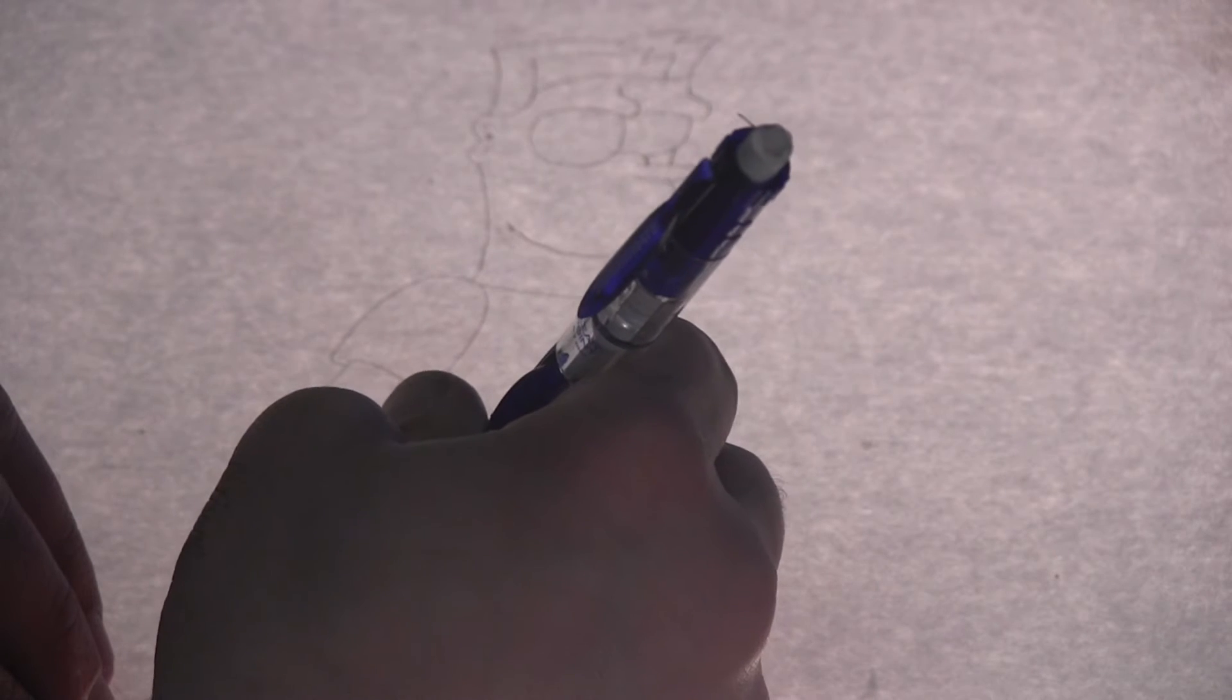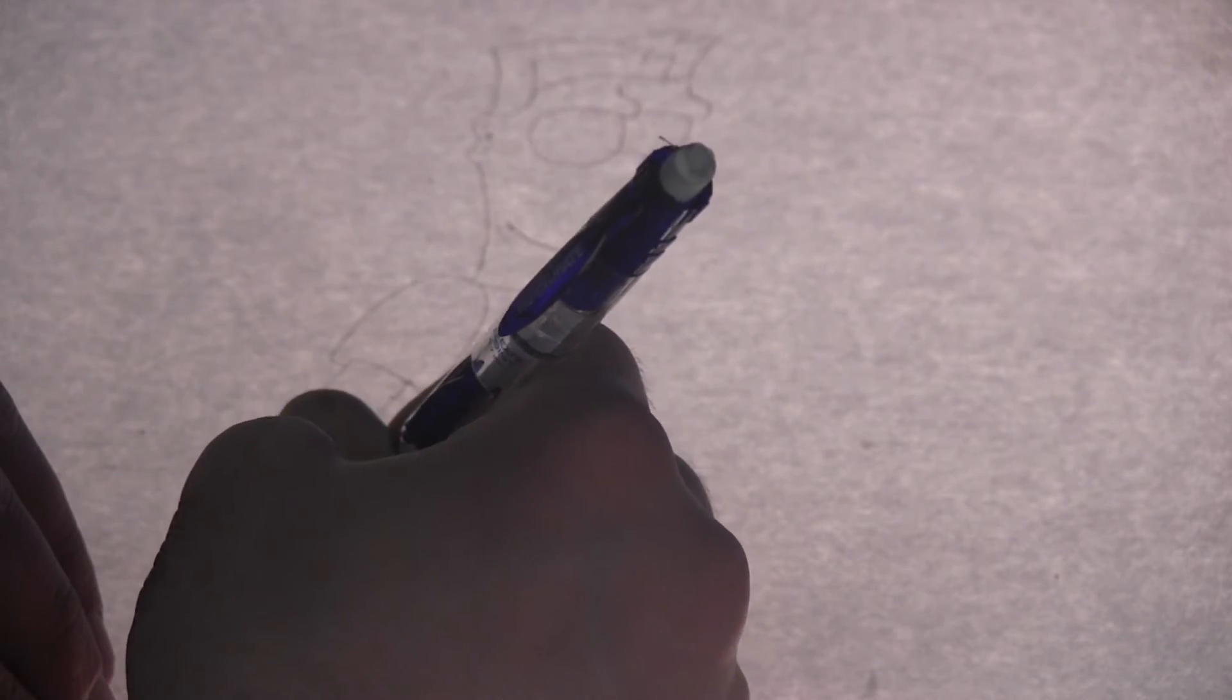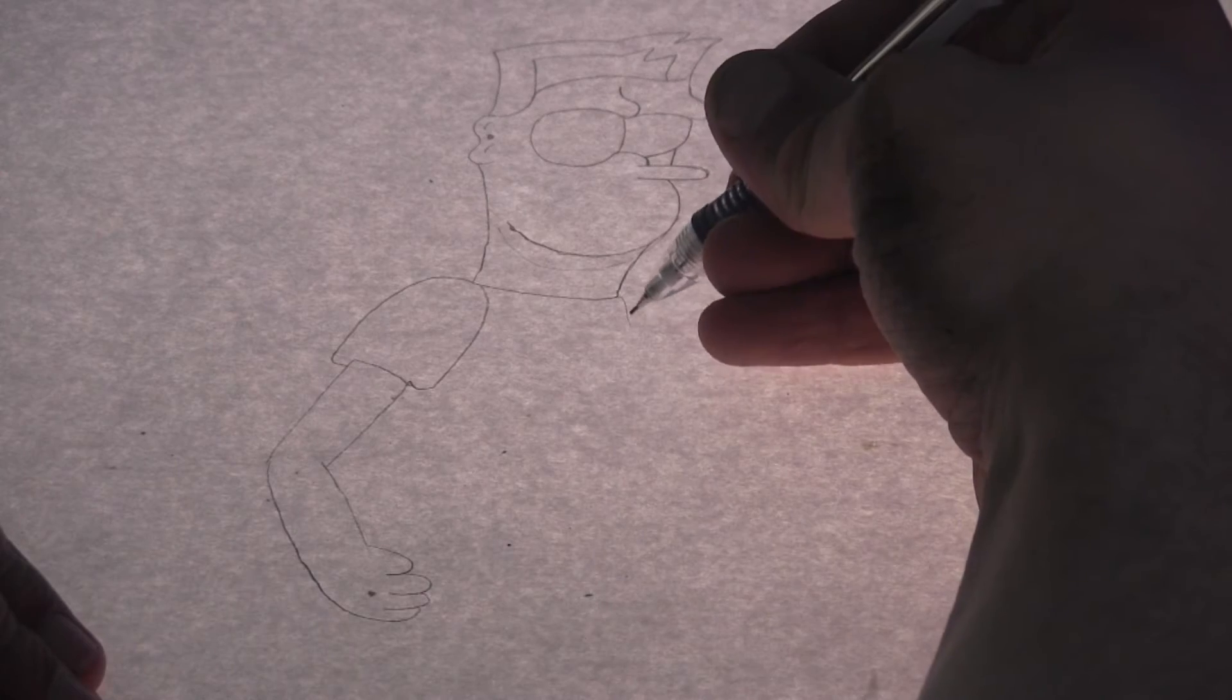His hand. Hands are a weird thing to draw. So if you're starting out, it's good to draw circles for where the fingers go. And I always just use three fingers because it's a cartoon and, you know, who cares. So then you're going to draw his body right here.